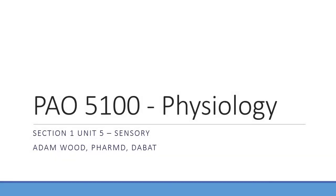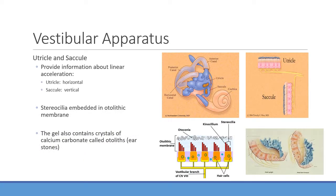We're finishing up our discussion on equilibrium and how we maintain balance. We covered the semicircular canals — the difference between perilymph and endolymph, how moving your head displaces fluid in the ampulla, opening or closing potassium channels via the stereocilia and kinocilium. That information gets transmitted via cranial nerve eight, the vestibulocochlear nerve, telling us about positional movement of the head. Now we're moving on to the saccule and utricle, which describe a different sort of motion.